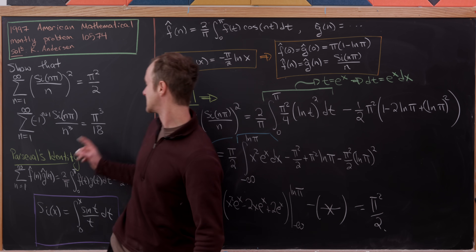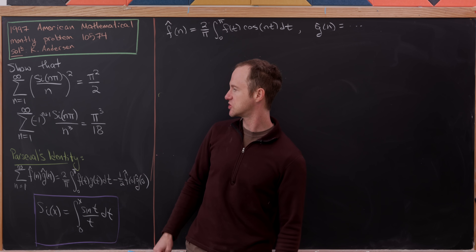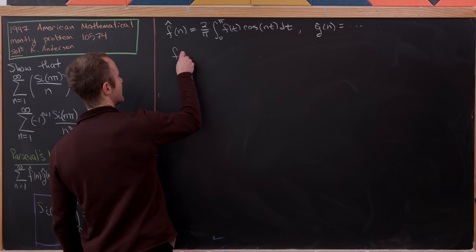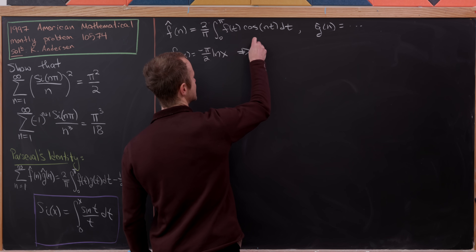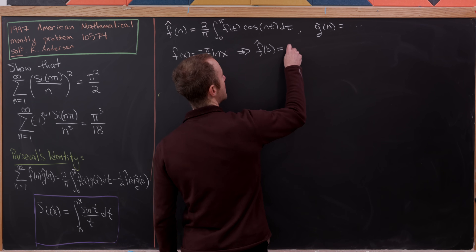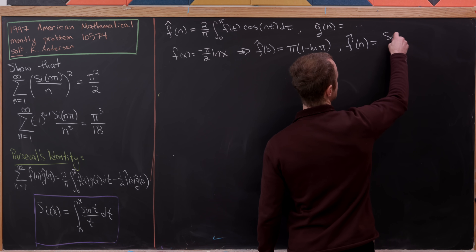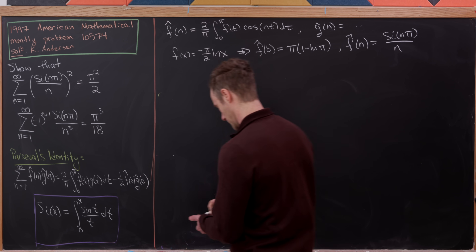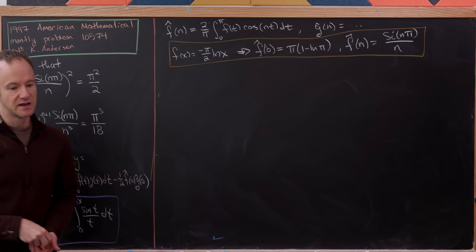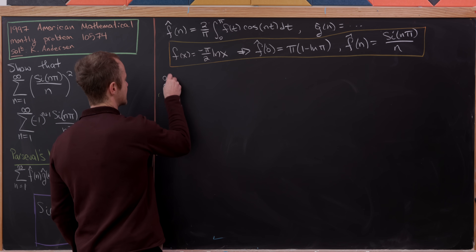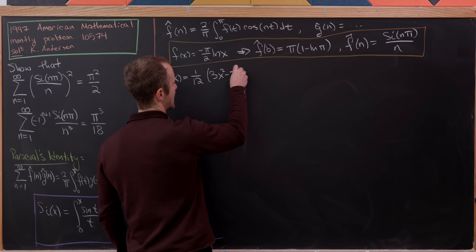Let's set up the second identity, leaving the finish as a homework exercise. We take f(x) to be the same as before: minus π/2 times ln(x). Recall that f̂(0) = π(1 − ln π) and f̂(n) = Si(nπ)/n. Now let's choose a new g(x) for this second sum.